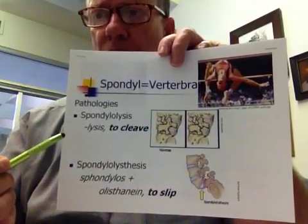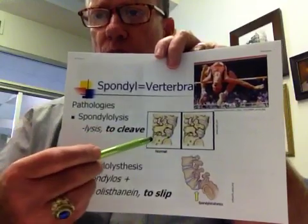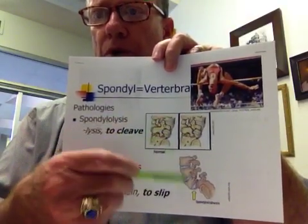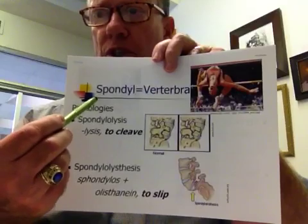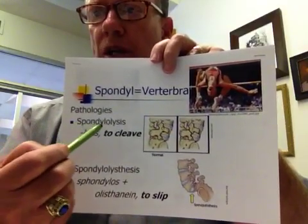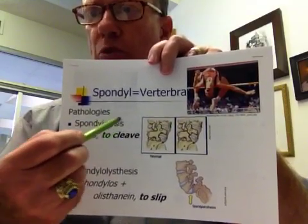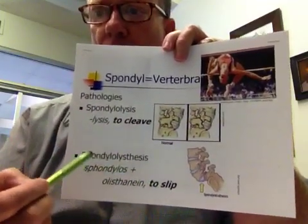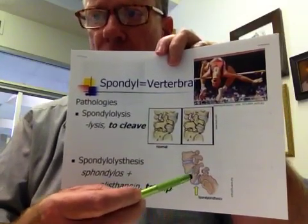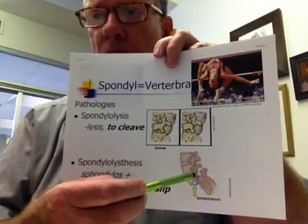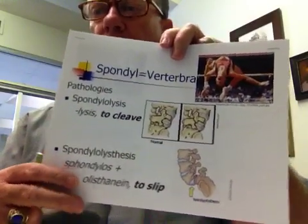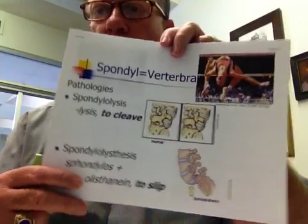Two conditions you need to be aware of: spondylolysis and spondylolisthesis. Spondylolysis is where there's a fracture through the neck of the pars articularis — both conditions result from hyperextension. Spondyl means vertebra, lysis means to break or cleave, so spondylolysis is a fracture of the vertebra. Spondylolisthesis is where there's actual displacement, with compressive force on the spinal cord. This person will have an anteriorly rotated pelvis and severe low back spasms.